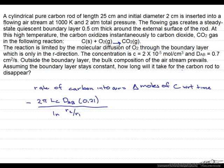However the rate of carbon into the air is going to be positive 2πLc·D_AB·0.21, since the rate of carbon is going into the opposite direction, divided by ln of r2 over r1.